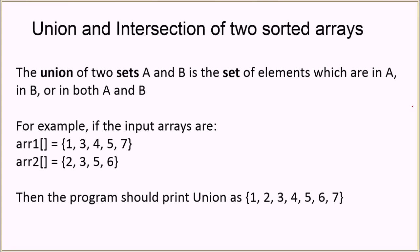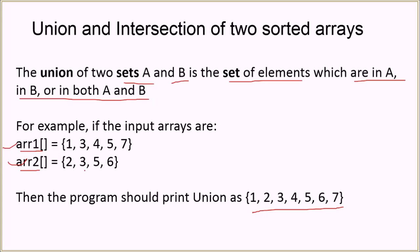Let's look at what we mean by union, and then we'll look at what we mean by intersection. By union we mean that, suppose we are given two sets A and B, then the union is a set of elements which are in A, in B, or in both A and B. For example, given two arrays, array 1 and array 2, the union will consist of all elements which are in either A or B, or in both.